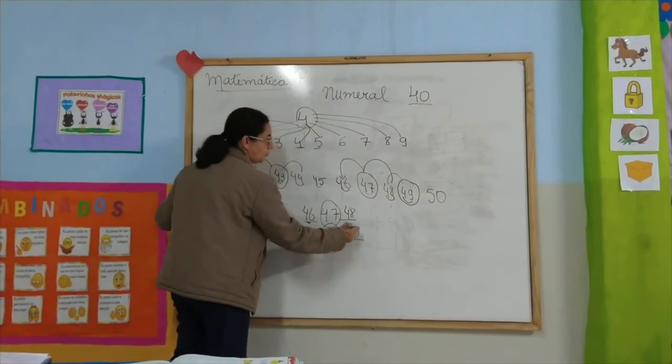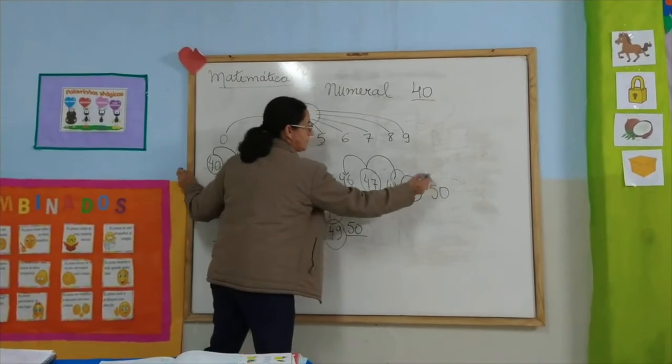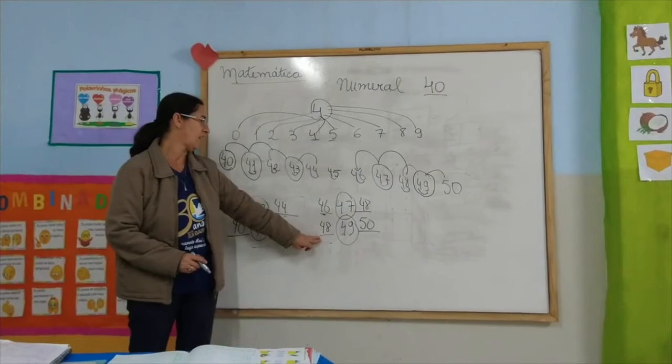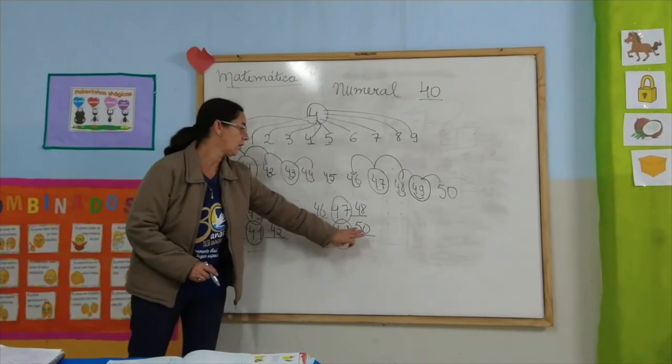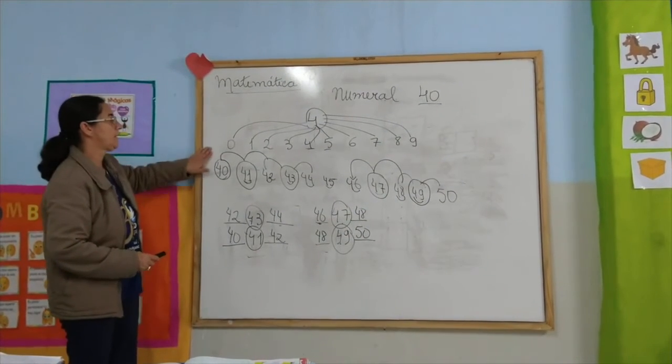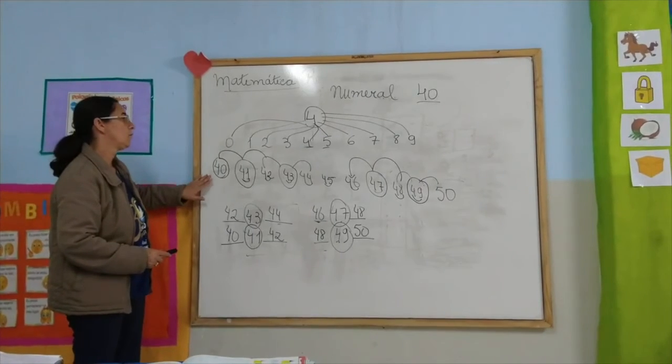Então, quem mora depois de 49: 50. Vizinhos de 49: 48, 49, 50. Essa é a família do numeral 40.